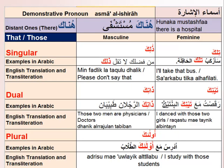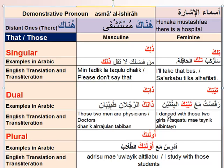For feminine dual far away — referring to two girls or two feminine objects — we say 'thainika'. For example, 'thainika alfatatani' means 'those two girls'. So for dual feminine that are far away, we use 'thainika'.